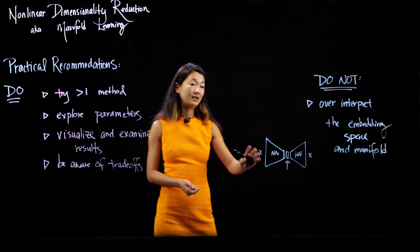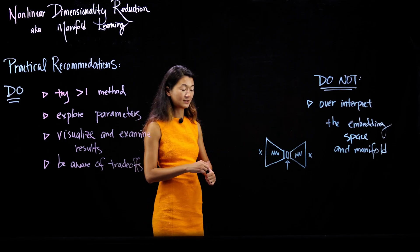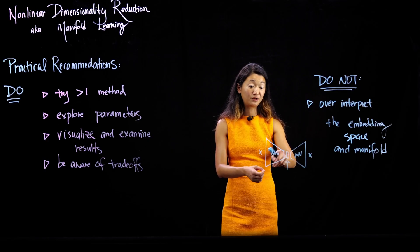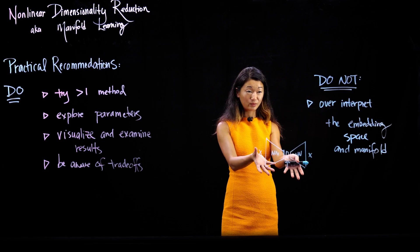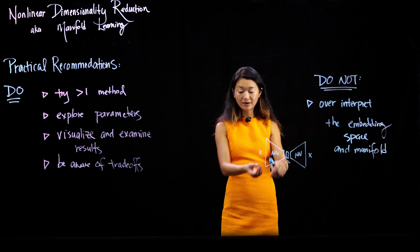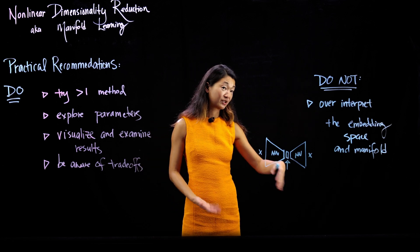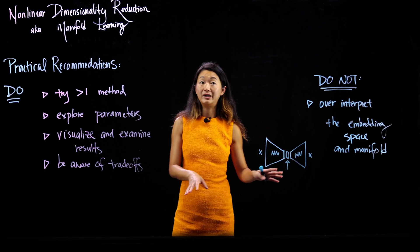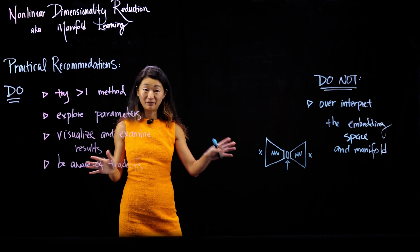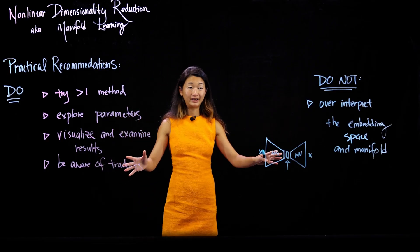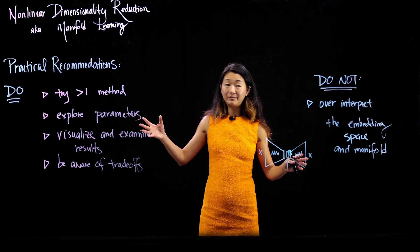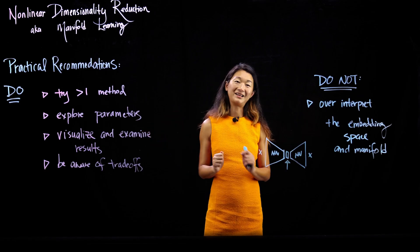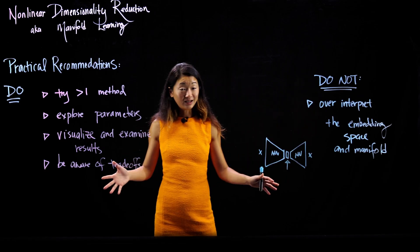The autoencoder architecture takes your data and squeezes it so that it has to be encodable and decodable in some low-dimensional space. If you use a linear neural network, this actually converges onto PCA — you can compute principal component analysis this way. But if you use nonlinear components, you can write down a loss function based on how similar the reconstructed output is to the input, and that is a perfectly valid way of doing nonlinear dimensionality reduction. Even with autoencoder architectures, my practical recommendations still stand: try multiple methods, explore parameters, look at your results, and don't take the embedding too seriously.